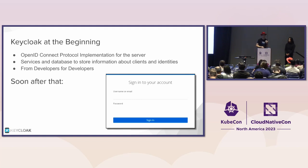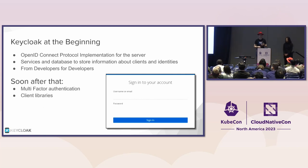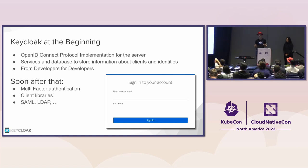Soon after that, we added more functionality: multi-factor authentication, client libraries. For lots of frameworks, there were then implementations of Keycloak client libraries. We added things like SAML, LDAP — all the things you need in an enterprise context. That's how it all started and evolved over time.